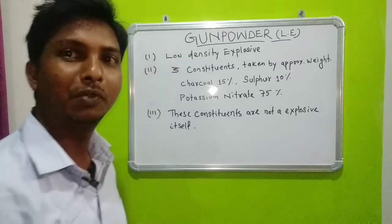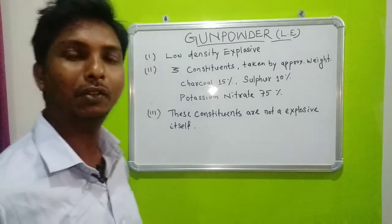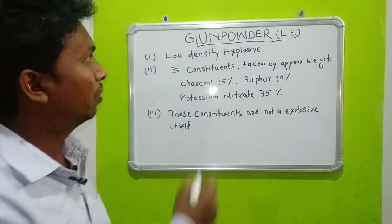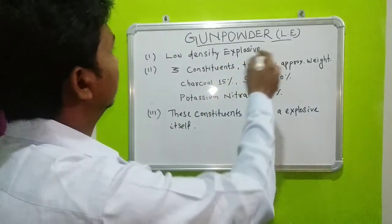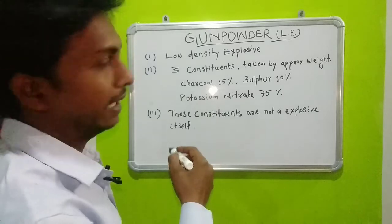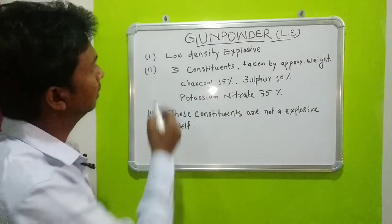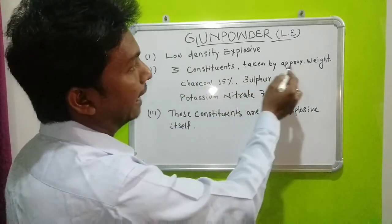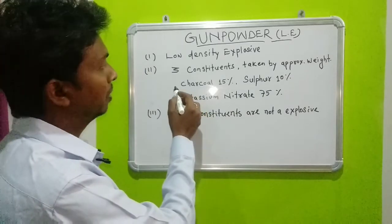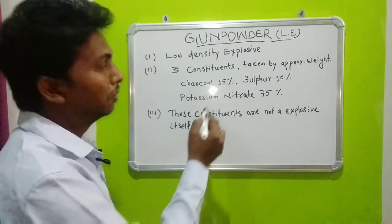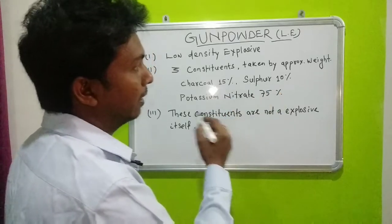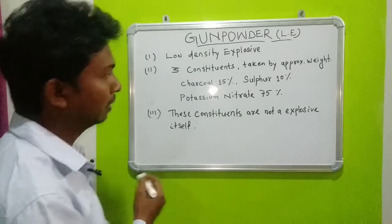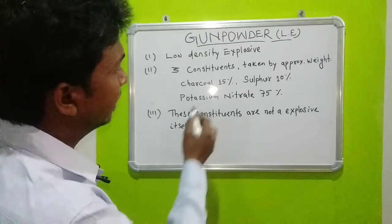Welcome to the YouTube channel Surface Mining Technology. In this video I am describing about gunpowder. Gunpowder is a low density explosive, or low explosive. It contains three constituents taken by approximate weight: charcoal 15%, sulfur 10%, and potassium nitrate 75%.